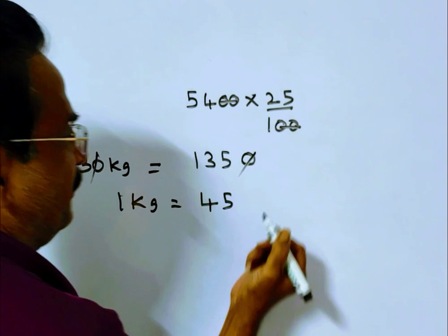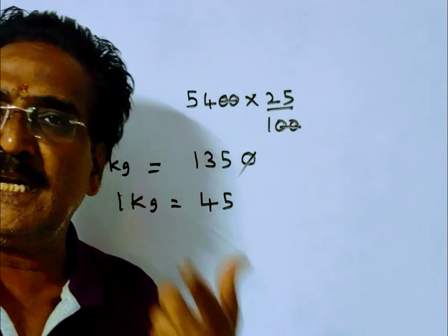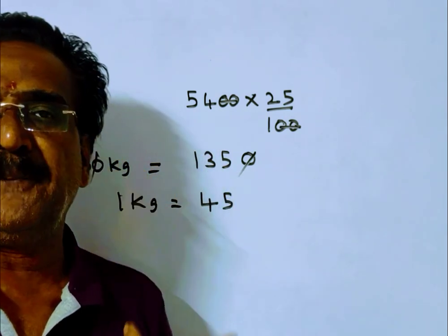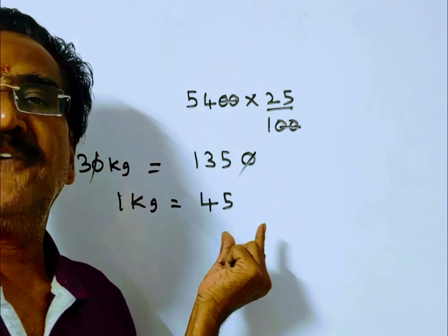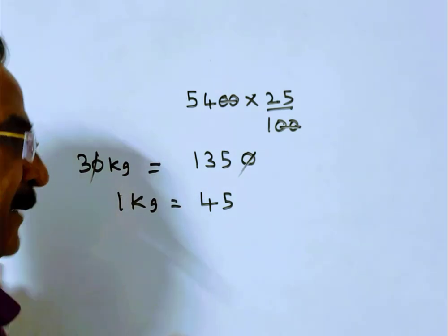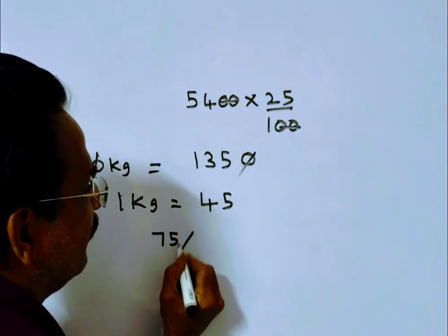25 percent. So this 45 rupees equals 75 percent of the original price. If 75 percent of the original price equals 45, what is 100 percent? 100 divided by 75 times 45.